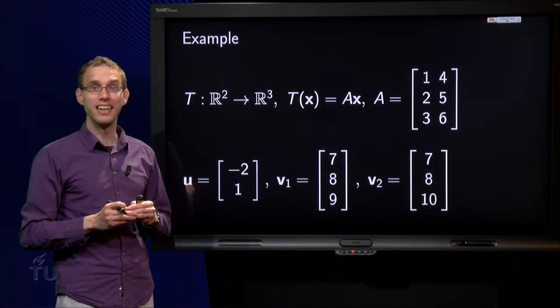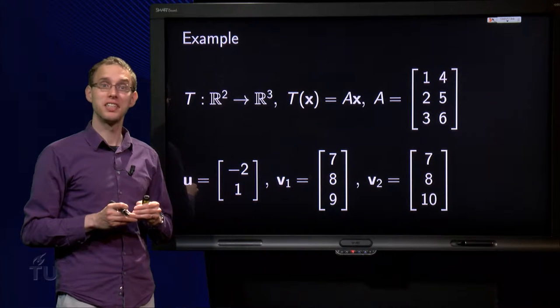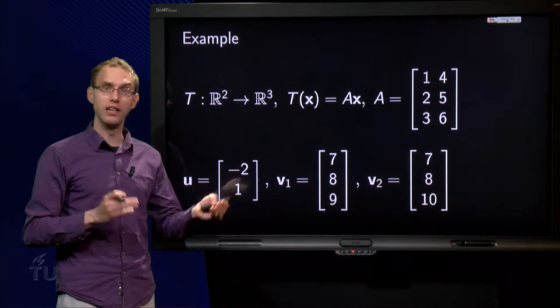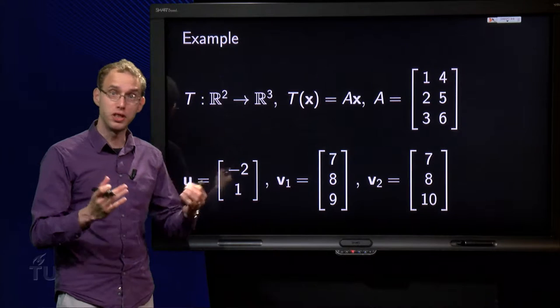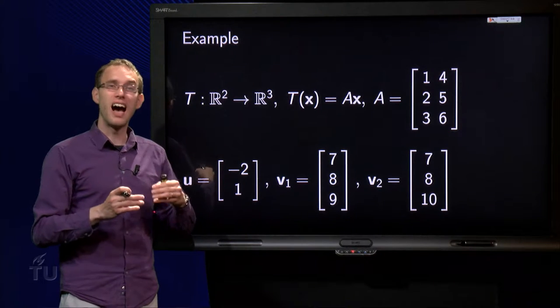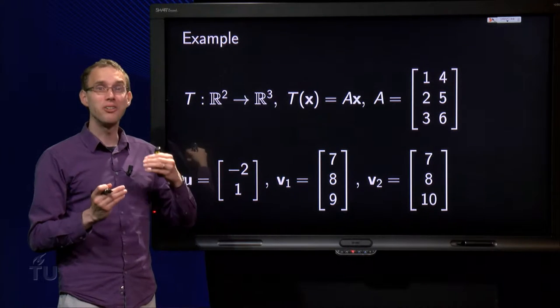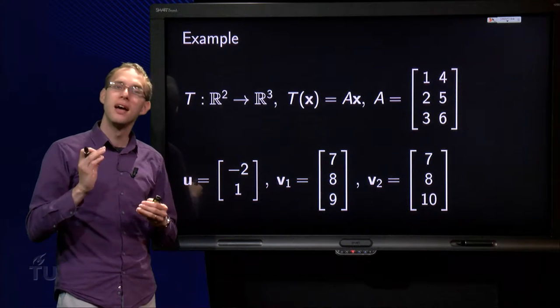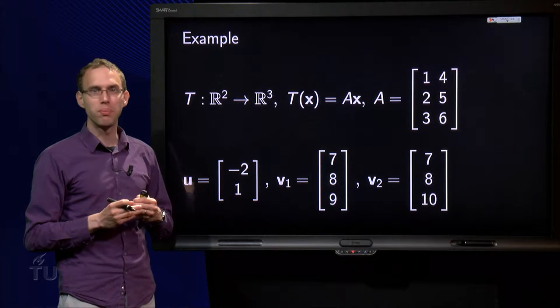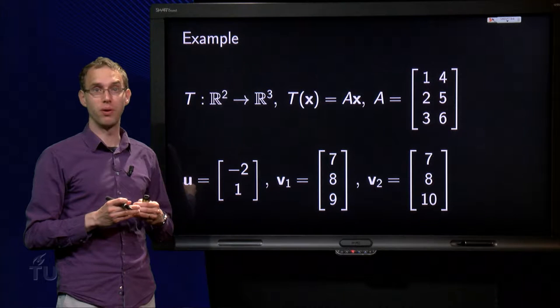We have seen that any m times n matrix implements a mapping from R^n to R^m. It is a function prescription. But how does this function look, how does it work?